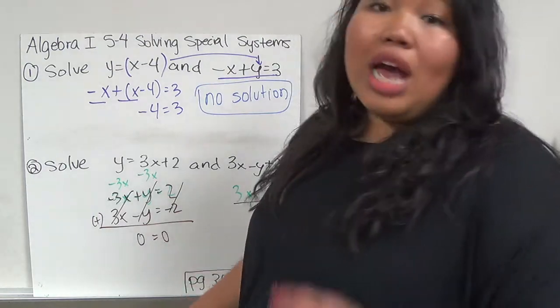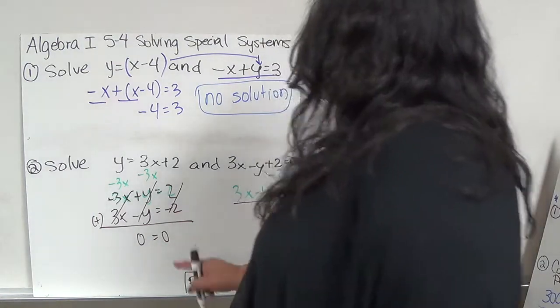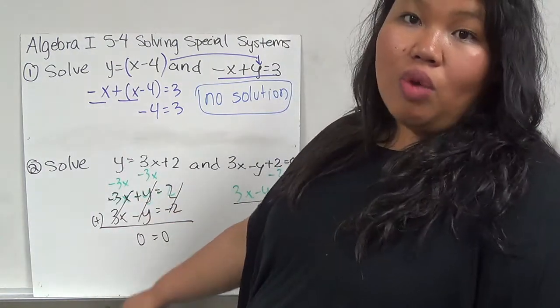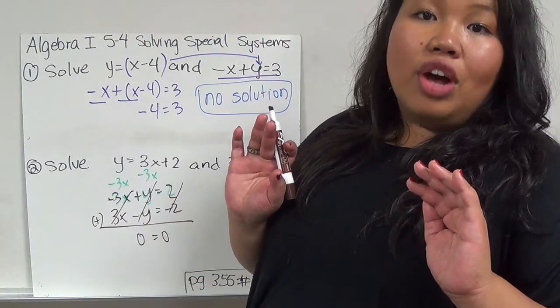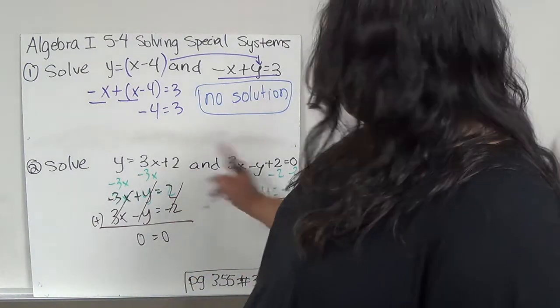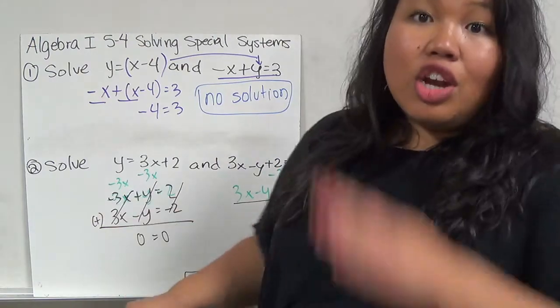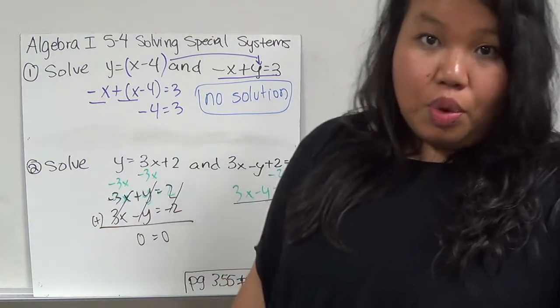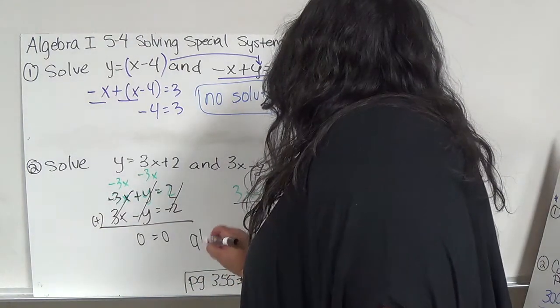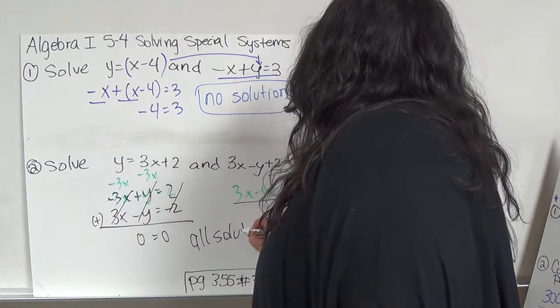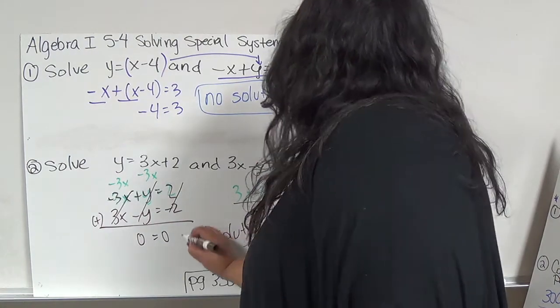Because 0 equals 0 happens all the time, this means that no matter what I plug in for x and y, they will have all the same solutions. What that actually means is if I graph these two equations, they're going to overlap because they have all of the points shared together. So this is called all solutions.